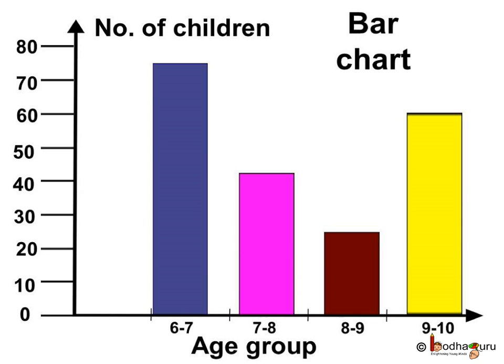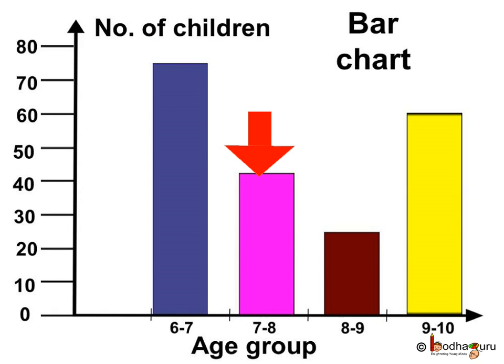So here we get the bar chart. The blue bar represents the number of children in the age group 6 to 7, which is equal to 75. The pink bar represents the number of children in the age group 7 to 8, which is equal to 40.